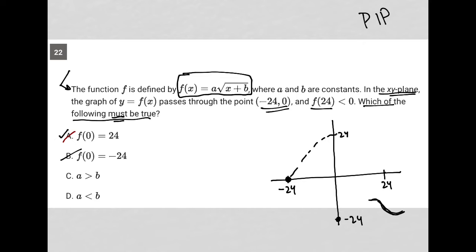How about choice C, a is greater than b. The graph doesn't help me with that, so I must need to go back to this function. What can I do with this function? Well, I can start plugging things in.